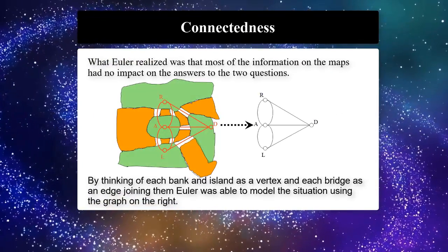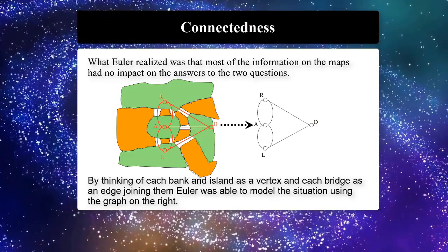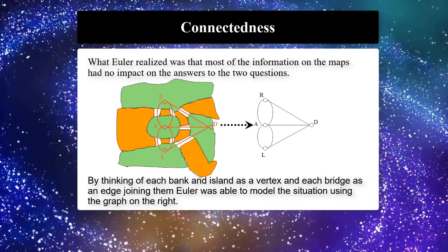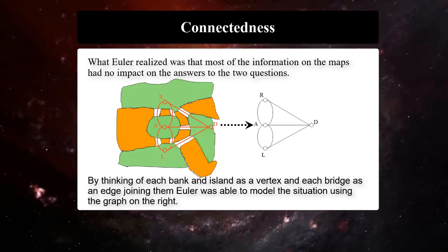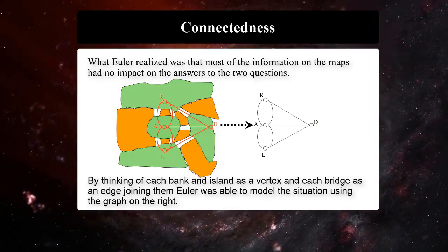What Euler realized was that most of the information on the map had no impact on the answer to the question. Euler was able to model the situation using the graph you can see on the right hand side.